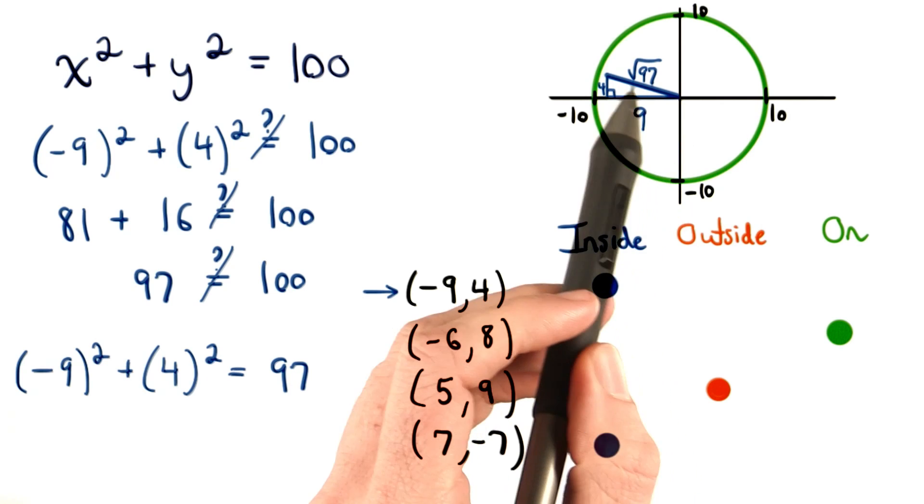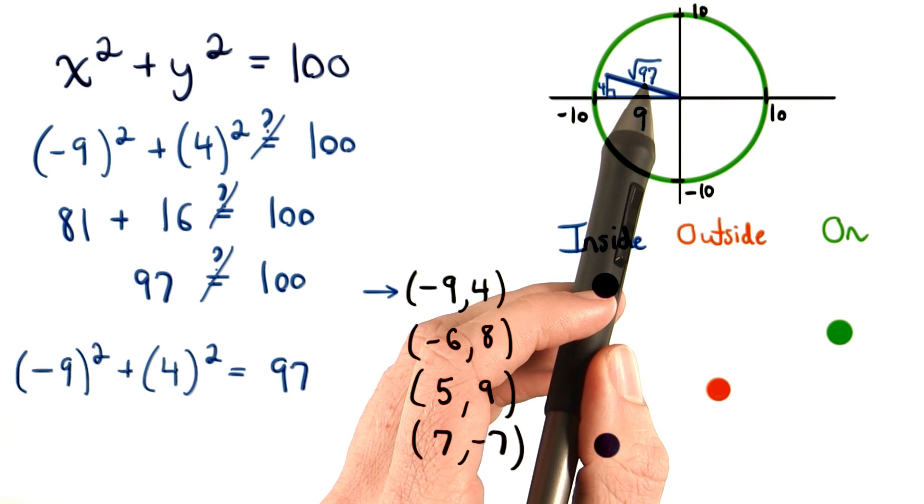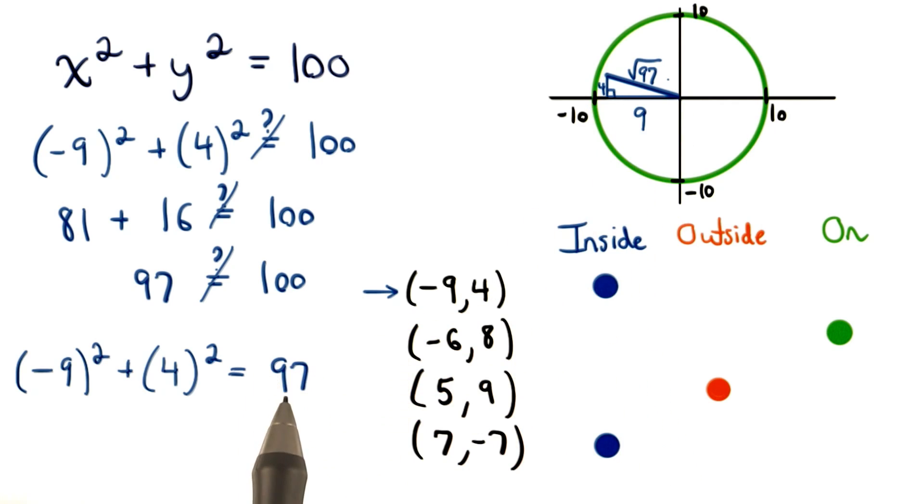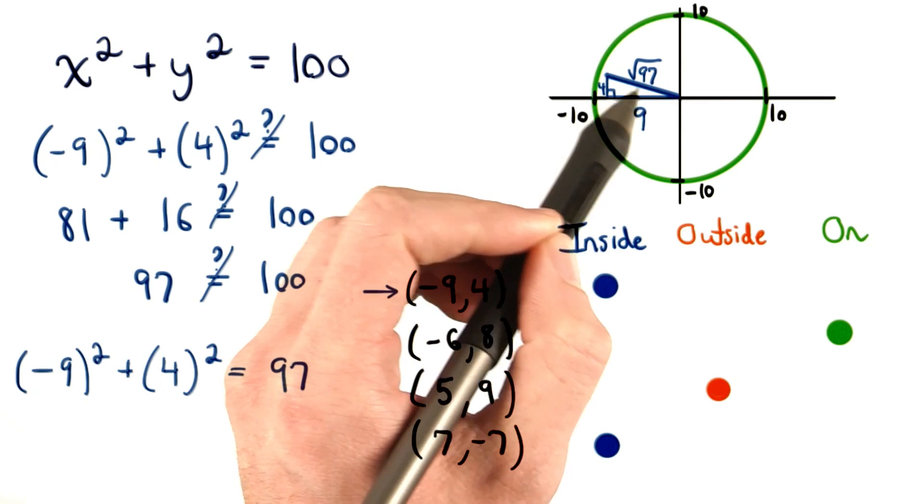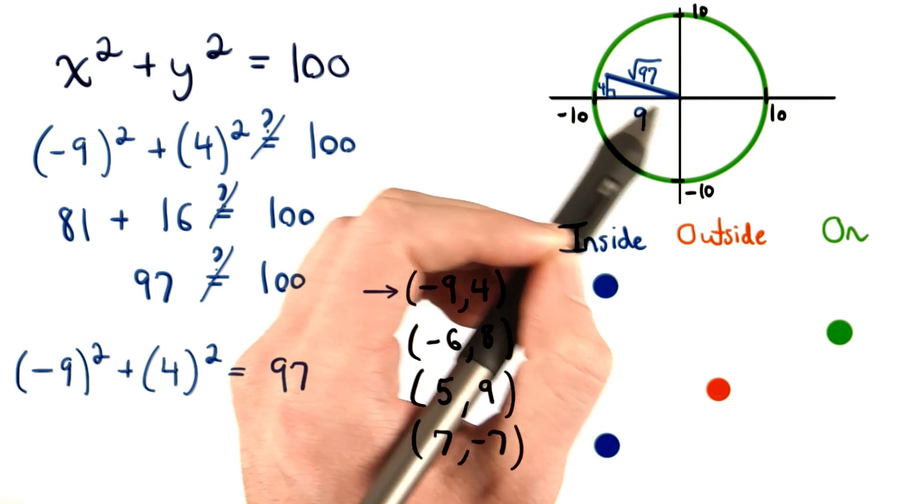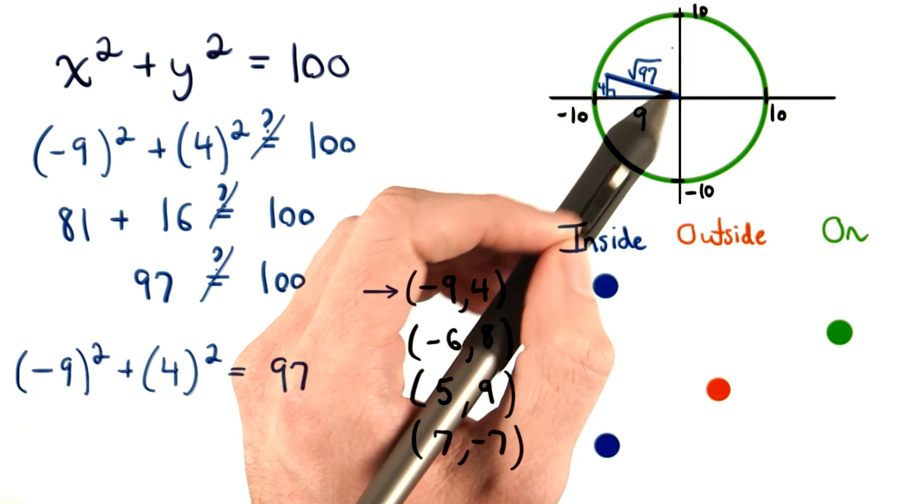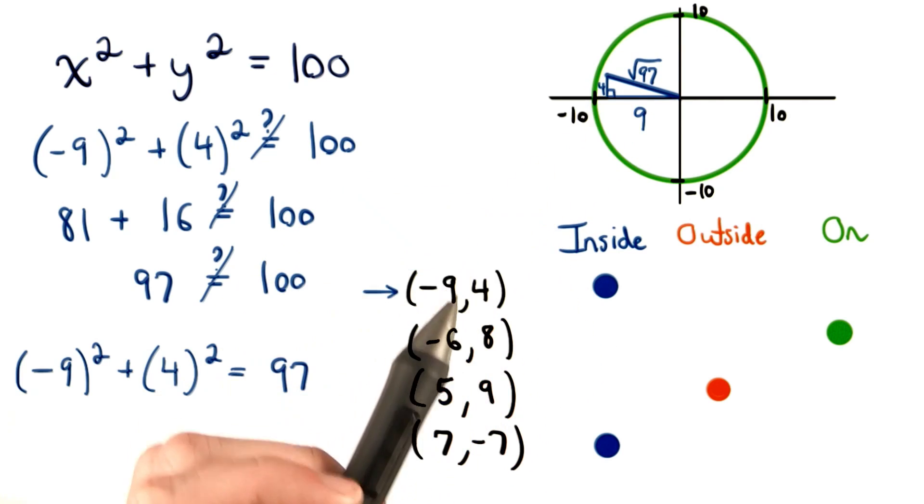We know that the distance from the origin to this point is the square root of 97. It's the square root of this number. We really want this distance to be 10, or the square root of 100, and it's not. It's less than that. So, that's how we know this point is inside the circle.